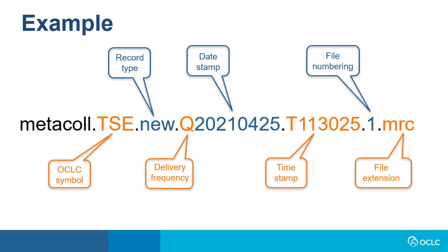An example of a file of records for library TSE with new records, output quarterly on April 25, 2021, at the 11th hour, 30 minutes and 25 seconds. File 1 of this set, and output in MARC standard.